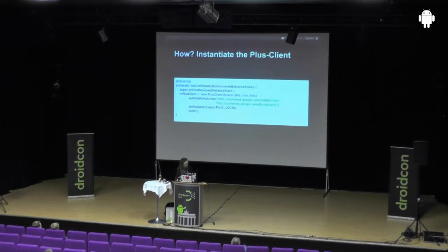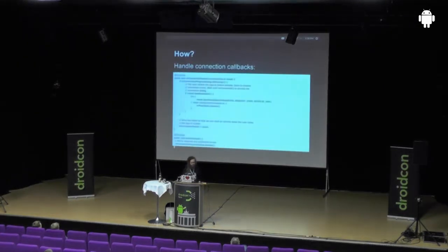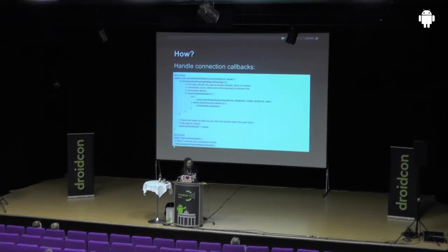Next, very important: you initialize the Google Plus client. These activities are the app activities or moments — I'll talk about activities later. And this is the scope I was talking about; here you can also add scopes like Drive or other Google APIs. Now you have to handle some connection callbacks. Here you resolve errors from the connection — for example, if the user chooses another account or disconnects the account, that's an error and then you can connect again. Finally, the onConnected callback gives you a callback when you are connected, and then you can show the user that everything is fine.